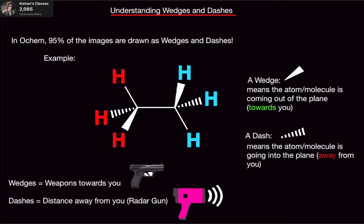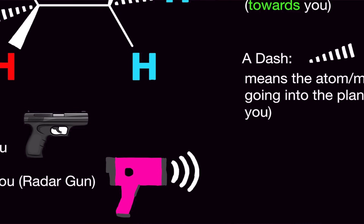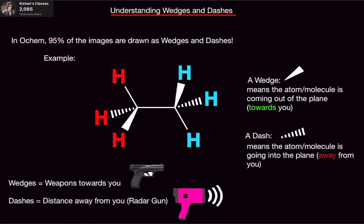Now, in the same scenario, say you get pulled over by a cop but instead you decide to do a high-speed pursuit. The cop is obviously going to follow you, and he's tracking your speed with a radar gun. The radar gun suspiciously looks like dashes. So think about distance as dashes. We just had the Olympics — there's that sport, the 100-meter dash. Think about the runners dashing away from the start line. Away from you!